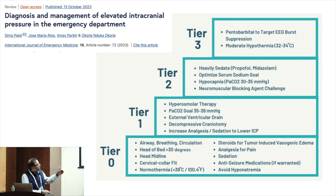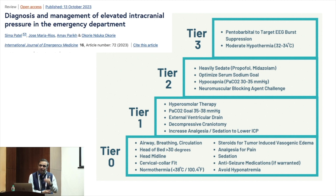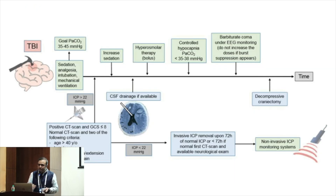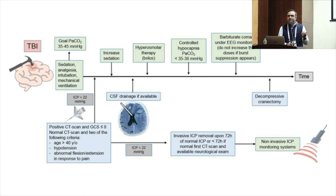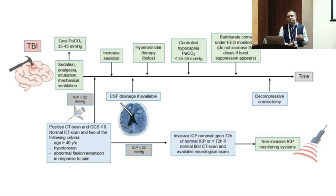Once these general measures do not work, we start talking about specific therapies to reduce brain swelling: hyperosmolar therapy, slight hyperventilation to a PaCO2 of 35 to 38, external ventricular drainage, and decompressive craniotomy. As per current guidelines, decompressive craniotomy comes towards the end. If tier 1 measures fail, you go to tier 2, which includes deep sedation, further hypocapnia, neuromuscular blockers, and finally barbiturate coma and moderate hypothermia. In the context of traumatic brain injury, decompressive craniotomy comes much later — the DECRA and RESCUE-ICP trials show that you may save the patient but leave them in a vegetative state, so it is used only when tier 2 measures fail.